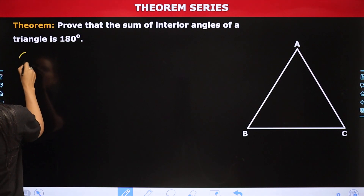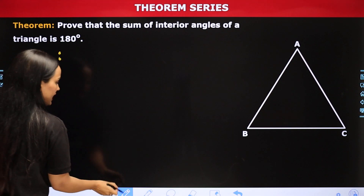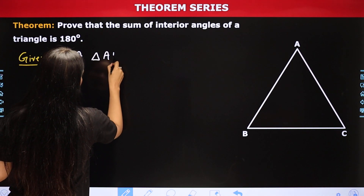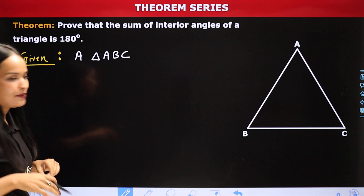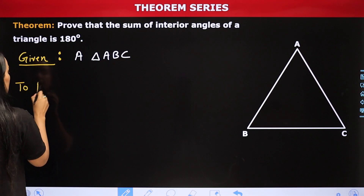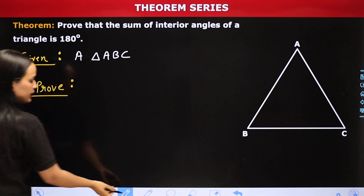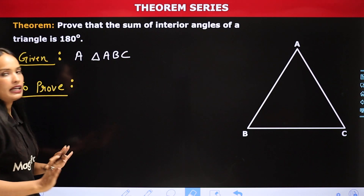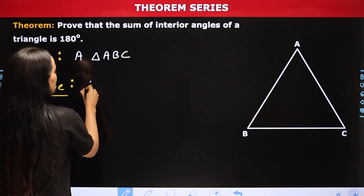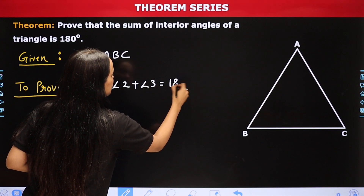तो सबसे पहले आप यहाँ पे लिखेंगे Given। आपके पास यहाँ पे given है एक triangle ABC, क्योंकि बिना triangle के Angle Sum Property of a Triangle कहाँ से prove करोगे। अब हमको इस theorem में क्या prove करना है? हमको prove करना है कि angle 1 plus angle 2 plus angle 3 is equal to 180 degree।